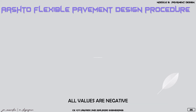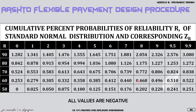For reliability, we use a table to get the value of ZR. For reliability values from 95% to 99.9%, these ZR values are all negative. For example, a reliability of 90% gives ZR = −1.282, and a reliability of 75% gives ZR = −0.675.